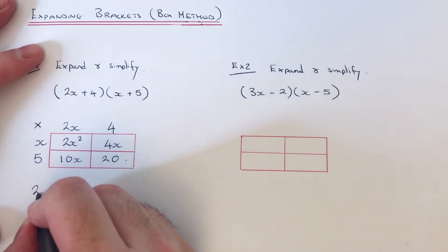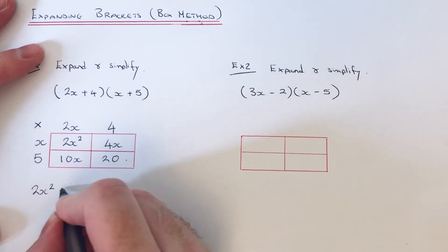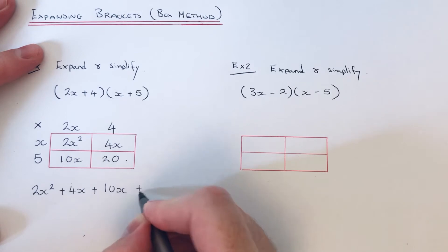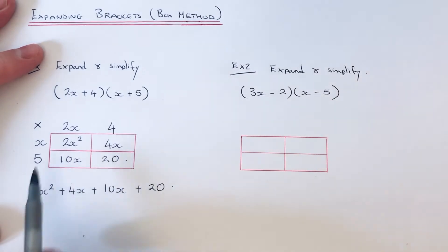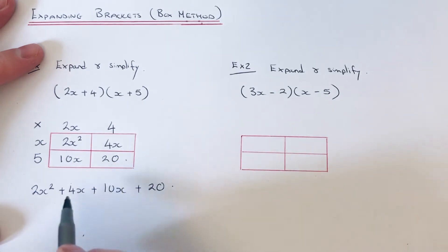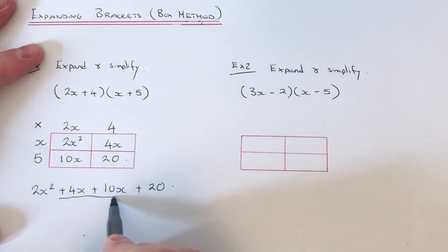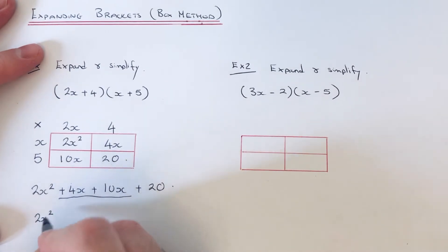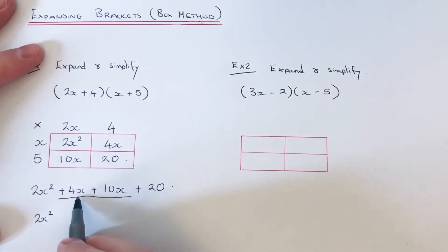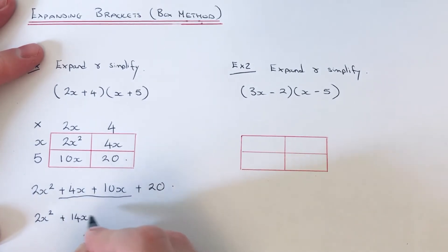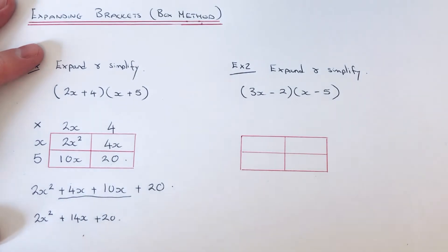Now write these four terms across one line: 2x squared, 4x, 10x, and 20. Then simplify the two middle terms that end in x — 4x add 10x gives 14x. So the final answer is 2x squared + 14x + 20.